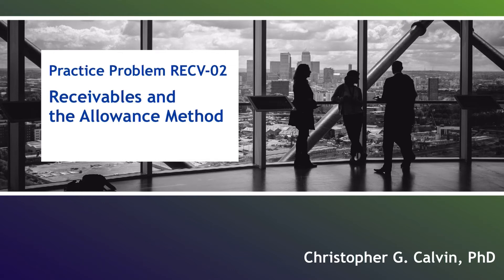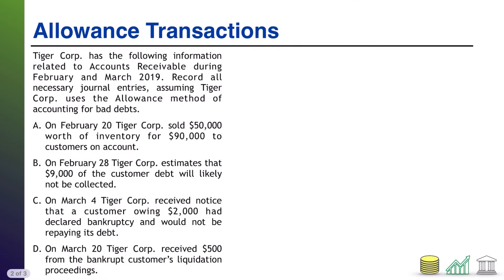Hi, everyone. Welcome to Practice Problem Receivable 02. This one is going to put your knowledge of journal entries under the allowance method of accounting for bad debts to the test. TigerCore has the following information related to accounts receivable during February and March 2019. Record all necessary journal entries, assuming TigerCore uses the allowance method of accounting for bad debts. There are four transactions to journalize using the allowance method.